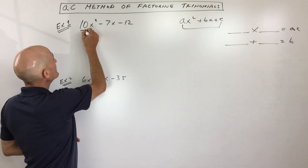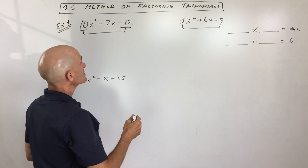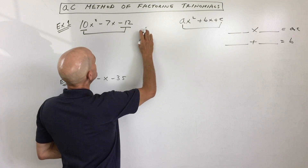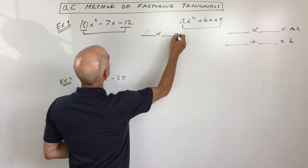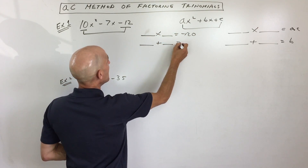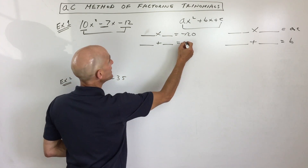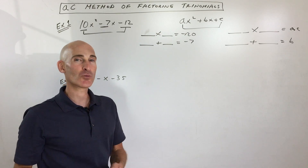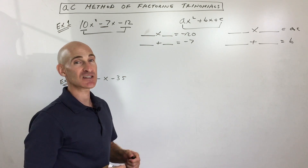Here we're going to take the a value 10 times the c value negative 12. So we say to ourselves, what two numbers multiply to 10 times negative 12, which is negative 120, but those same two numbers have to add to the middle coefficient of negative 7. That's the riddle we have to solve, and this is oftentimes the most difficult part of this problem. But once you figure out these numbers, it's easy and systematic from there.